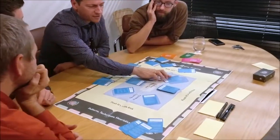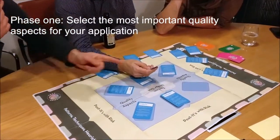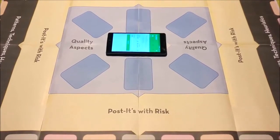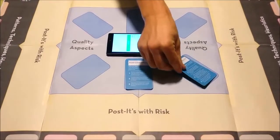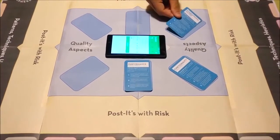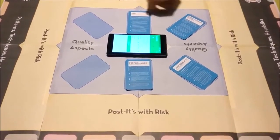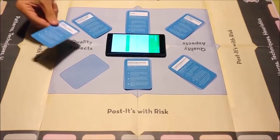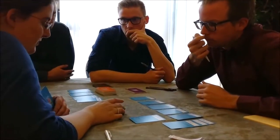Once you're set up, sit around the board and the cards with your team and go through three phases. Phase 1 is to select the most important quality aspects for your application. Put your application or a visual representation of it in the middle of the board and take all 20 blue cards out of the Test Sphere deck. As a team, discuss which six quality aspects are most important and put them on the board. The important thing is to make difficult trade-offs and come to a consensus. Some quality aspects might show some overlap, but read the examples on the cards to find out how they distinguish themselves.